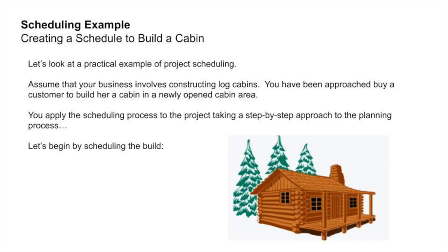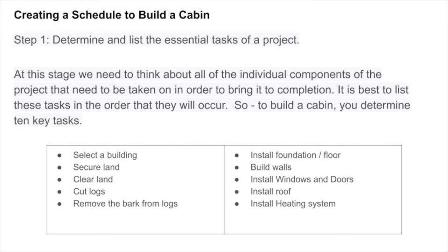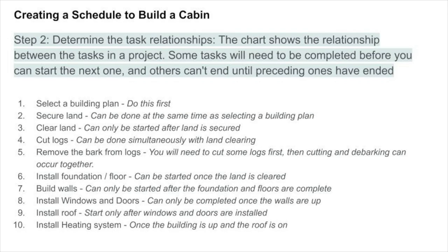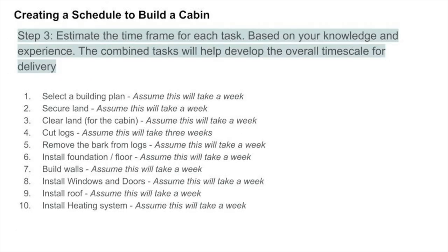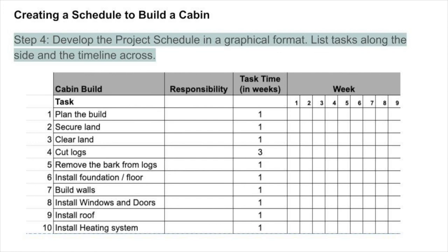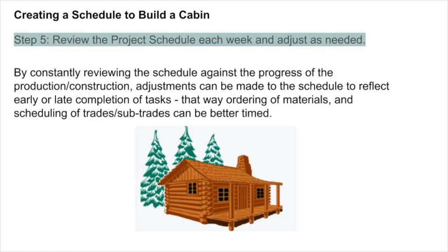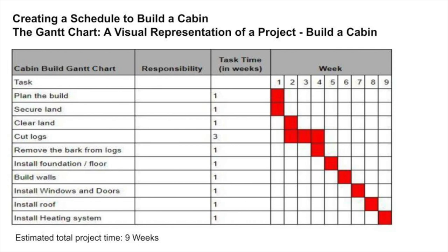What I've outlined here are the basic steps of the Gantt chart: determine the list of essential tasks for the project; then determine the task relationships — can they be done at the same time as other tasks or are they sequential; estimate the time frame for each task; the total combination of all tasks is your total timescale for your project; develop a project schedule in a graphical format; and review the schedule each week. There's nothing to prevent this schedule from changing as you move along. For example, if it rained the whole week you're supposed to remove bark from the logs, your whole schedule gets shoved back one week. So instead of taking nine weeks to build a cabin, it's going to take ten. You can reevaluate the schedule to see if you're on schedule, off schedule, or what a revised schedule will be.